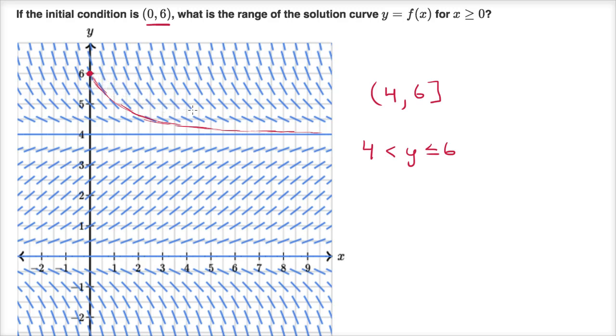So there you go. The curve would look something like that, and you can see the highest value it takes on is six, and it actually does take on that value because we're including x equaling zero, and then it keeps going down, approaching four, getting very, very close to four, but never quite equaling four.